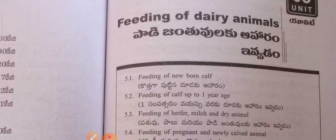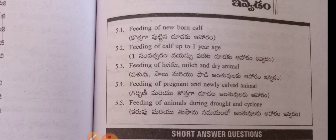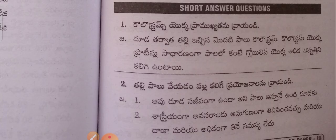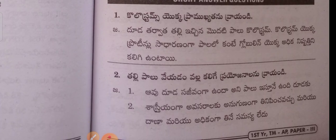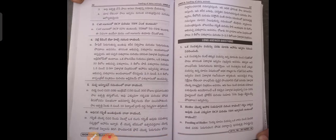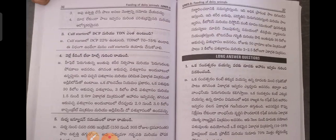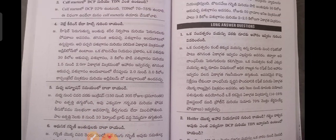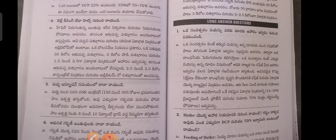Next, fifth unit: Feeding of Dairy Animals. Important topic: colostrum. The unit covers colostrum in detail, with long questions at question numbers 5 and 6, including 1 and 2 mark questions.